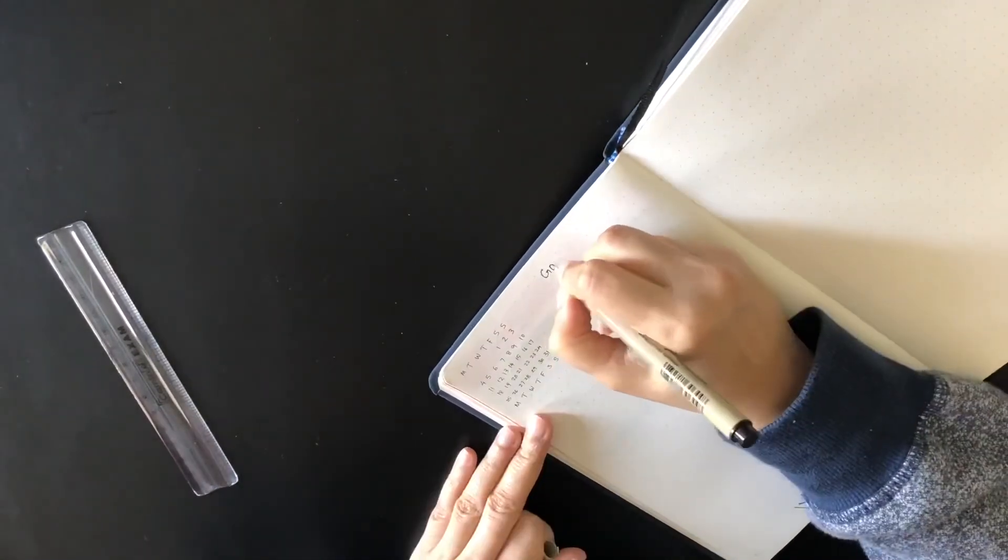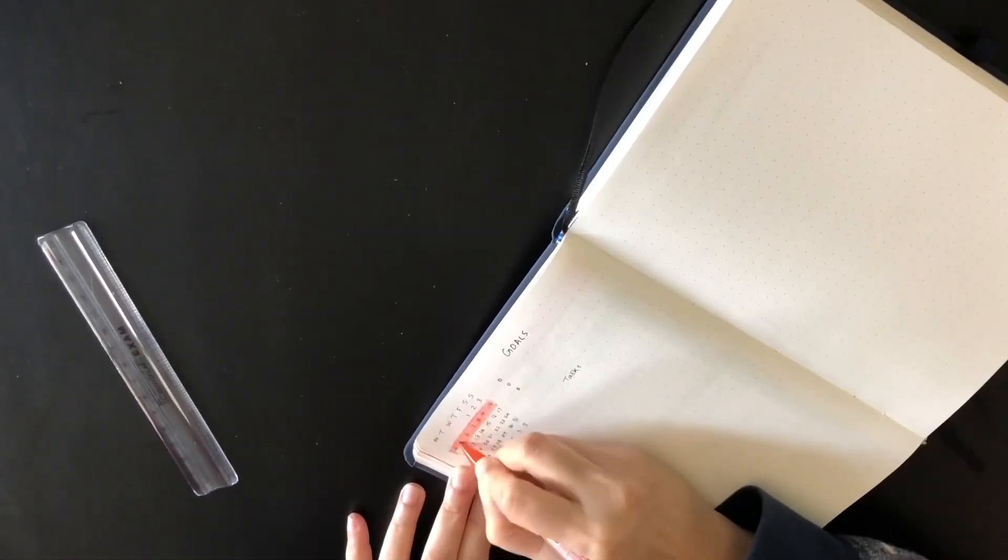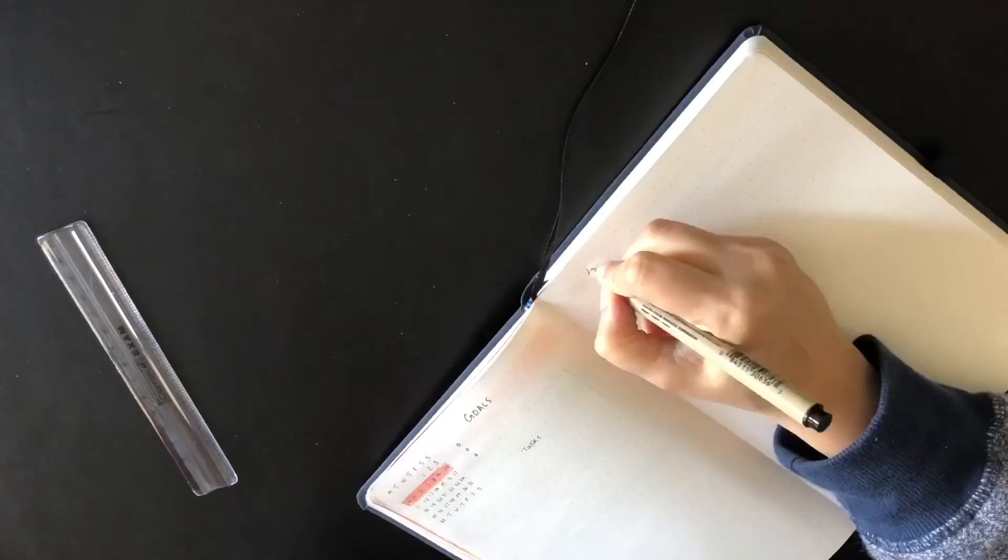Then I have space to write my weekly goals, and under that I write the tasks for the week and schedule them by marking them for the day under the calendar.